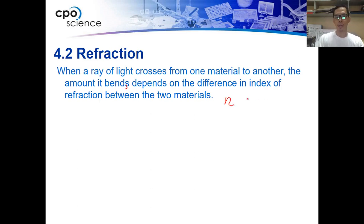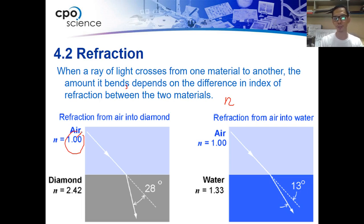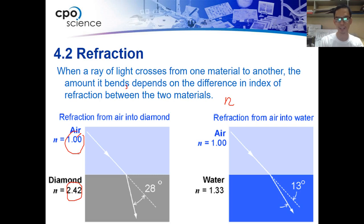Now if we take a look at this diagram, this is the refraction of air into diamond. In air, the index of refraction is one, so the light travels faster in this medium. When it enters the diamond, the light ray bends because diamond has a higher index of refraction compared to air.